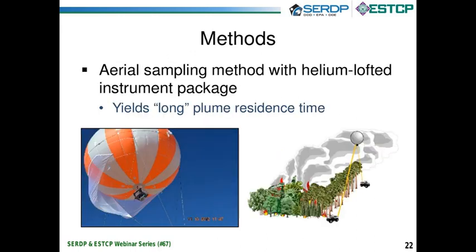SERDP funded in 2010 an aerial sampling method in which we used a five-meter diameter, about 16-foot diameter, helium-filled balloon to lift an instrument package. This balloon is tethered to the ground, and the idea was to maneuver the balloon into the plume — whether it be a forest fire, a detonation, or a propellant burn — and sample the pollutants.